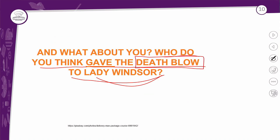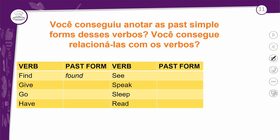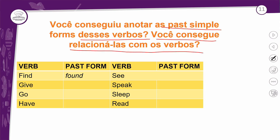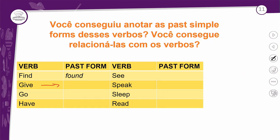O mistério do assassinato vai ficar em aberto, mas o mistério de como entender os verbos irregulares vai ser resolvido agora. Você conseguiu anotar as Simple Past forms desses verbos que eu mostrei durante a leitura? Você consegue relacioná-las com os verbos no presente? Eu comentei que 'gave' vem do verbo 'give', e disse que isso não é uma regra. Não existe uma regra — é preciso ter contato com eles.